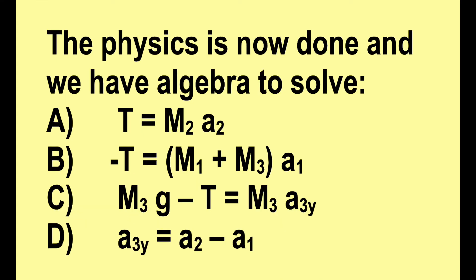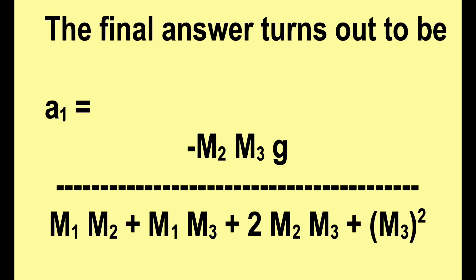The physics is now done, and we have algebra to solve. I won't go through all the steps, but to outline it, you would take equation a and use it to get rid of T in equations b and c, and then take equation d and use it to replace a3y in equation c. You're left with b and c modified, two equations and two unknowns, and you can take it from there. Here's the final answer, so you can check your work.